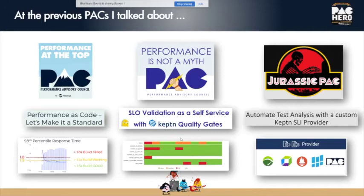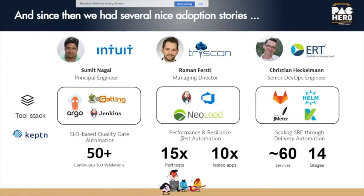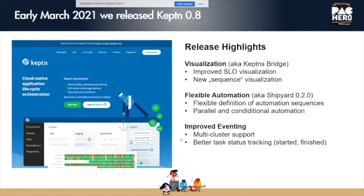Since launching Keptn, we've had great adoption stories from Sumit, Roman, Christian, and many others who have integrated Keptn into their automation to enforce quality gates. In early March we released Keptn 0.8 with several highlights: better visualization of SLOs based on PAC community feedback, more flexibility in automation — moving away from a very opinionated approach — and improved eventing with multi-cluster support and better tracking of tool integrations with started and finished tasks.